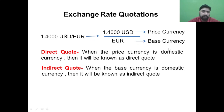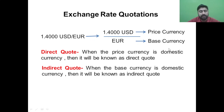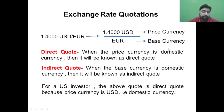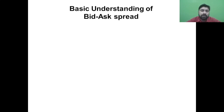Many students get confused about direct and indirect quotes. Through this example, I hope it becomes clear. For a US investor, the above quote — 1.400 USD per euro — is a direct quote because the price currency is USD, which is the domestic currency.